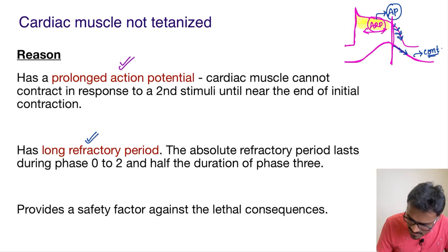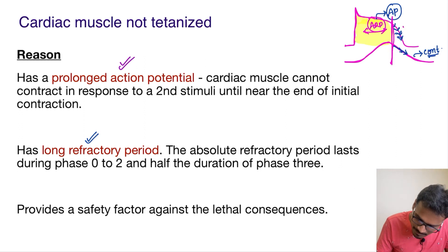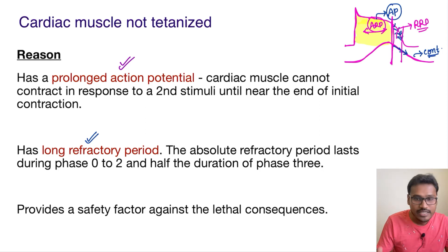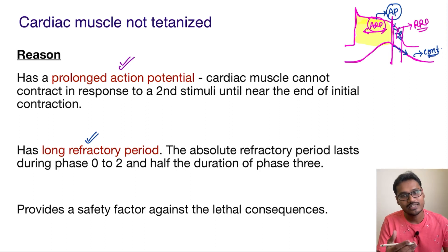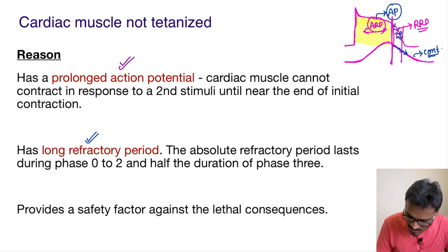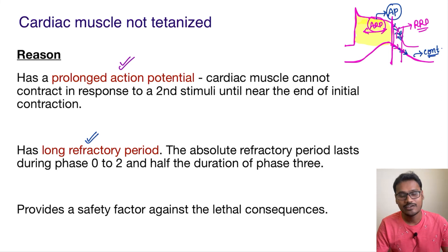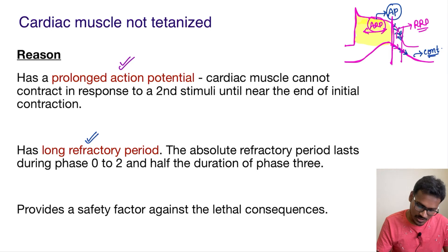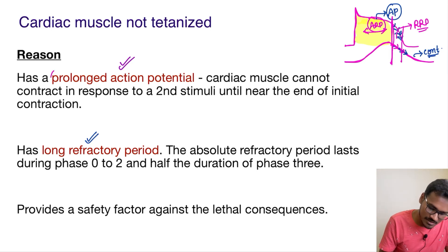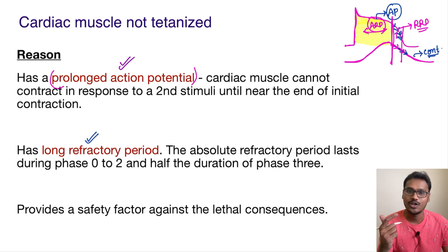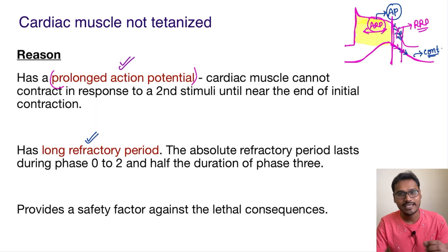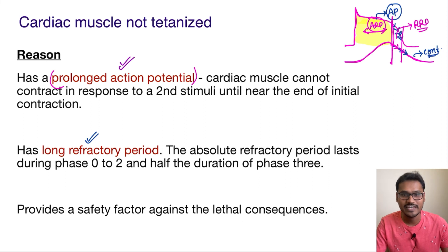Most of the time the cardiac muscle is in the absolute refractory period, and there is a small part where there is a relative refractory period, but during this relative refractory period the contraction is almost complete. So the contraction gets almost complete in the later half of the action potential duration. Because of these two reasons — the cardiac muscle having a prolonged action potential as well as a long refractory period — it prevents the cardiac muscle from getting tetanized, which is very important for the heart muscle to avoid lethal consequences.